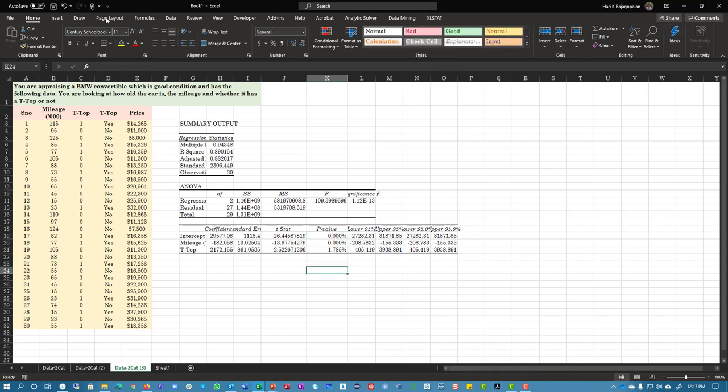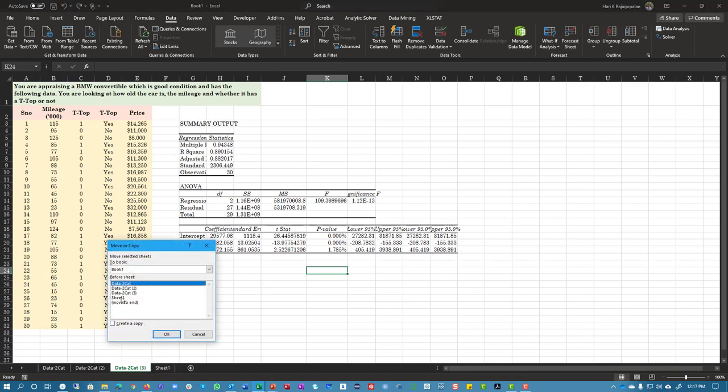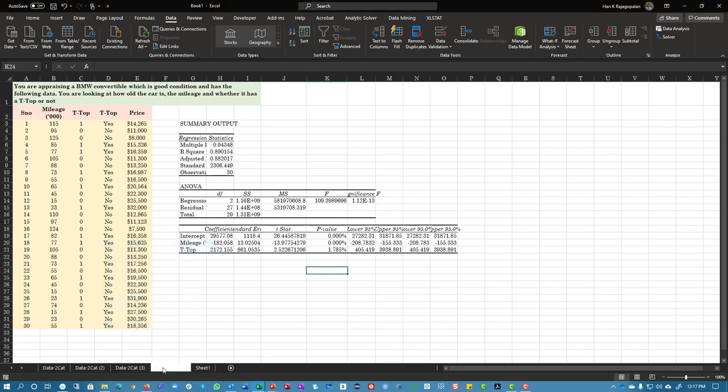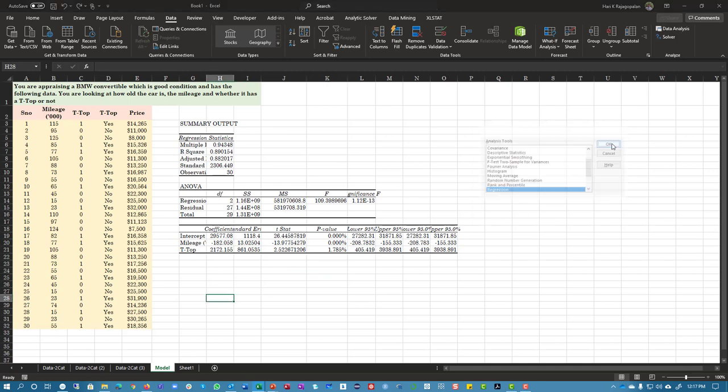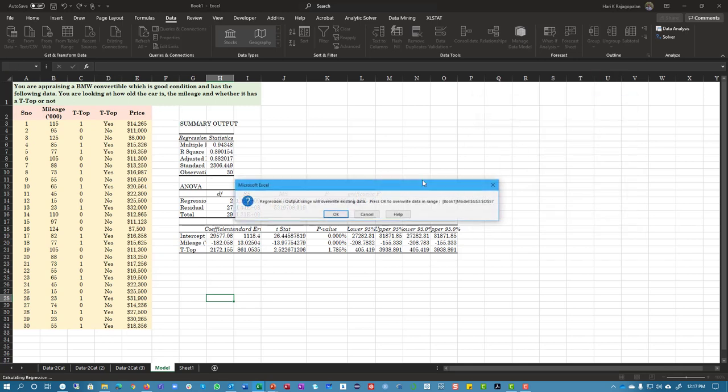And so now once we've got the model, what I normally do is I right click again and then say this is the model, right? So that I can tell people this is the model and then I go to data analysis regression. That is the price. That's correct. And now we can check the rest and make sure everything is OK. Click OK here.